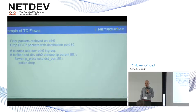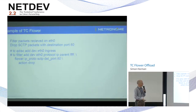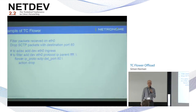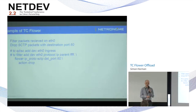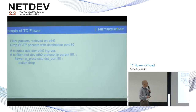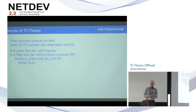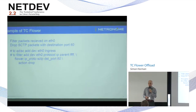Here's an example of TC Flower in action. We establish a QDisc on the ingress, which allows us to attach flower rules to something. We add a filter to eth0, IP protocol, parent is root — the topmost node. We use the flower classifier: we already know it's IP, but we want the IP protocol to be SCTP and the destination port to be 80. If those conditions are true, we drop the packet. This example is completely arbitrary — it could be UDP, we could match on the IP address, or output instead of drop.